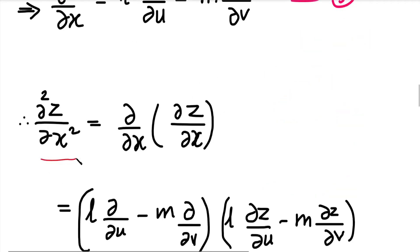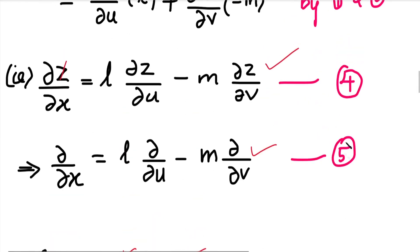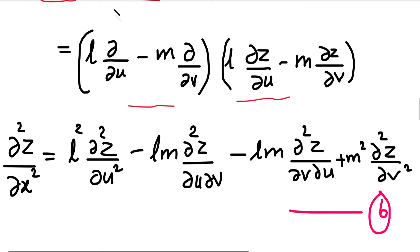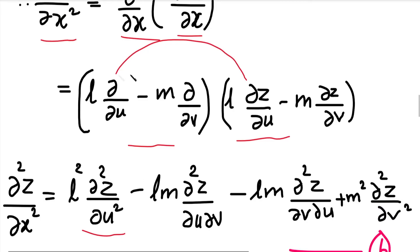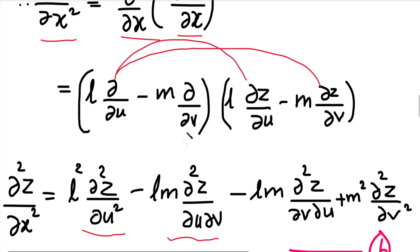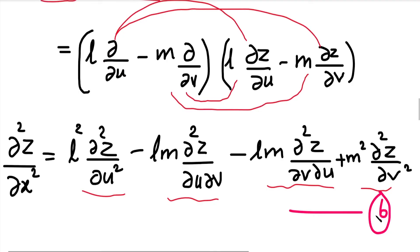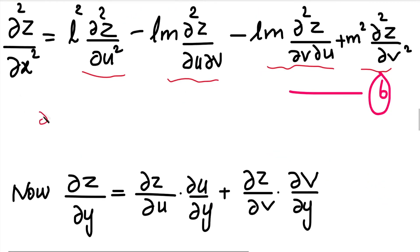Next we find ∂²z/∂x². This equals ∂/∂x of (∂z/∂x). We substitute equation 4 for both ∂/∂x and ∂z/∂x and multiply out the two operator expressions. Expanding the multiplication gives four terms. This result is equation number 6.